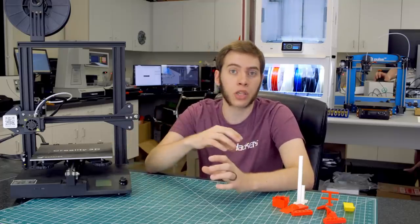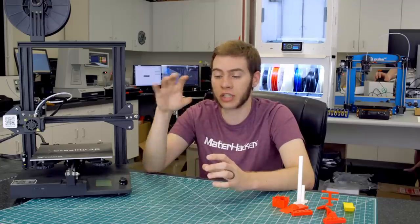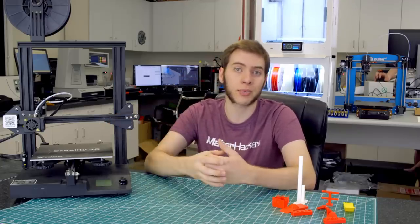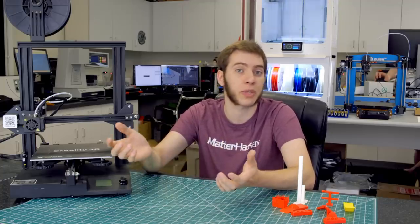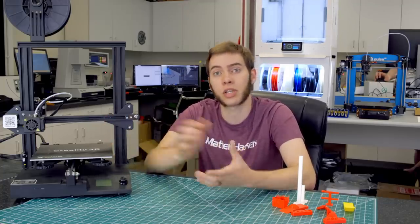If you're getting a really low score on this test, what you can do is you can see different ways you can more rigidly mount your printer, or the simplest is to just turn down acceleration jerk and print at a slower speed. It's not the ideal solution, but it is the simplest.